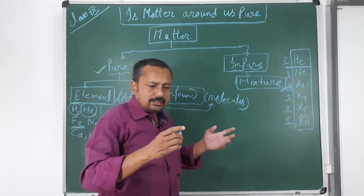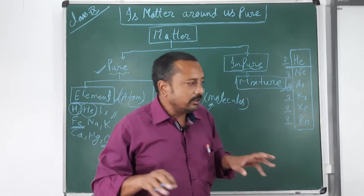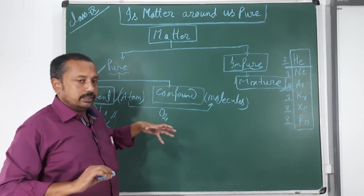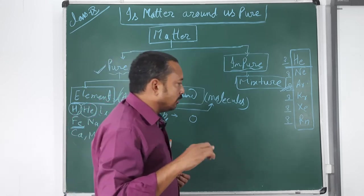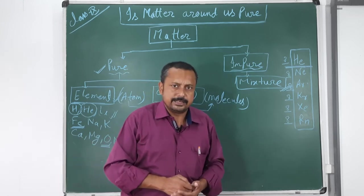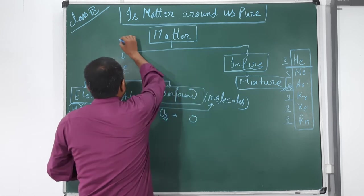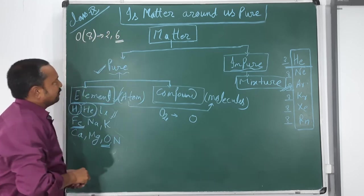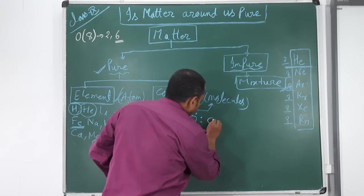The definition of a compound: compounds are pure substances formed by mixing two or more atoms in a fixed ratio by mass, either by gain and loss of electrons or by sharing of electrons. The force of attraction between two atoms within a molecule is known as chemical bonding. For example, oxygen element O is found in atomic form, but in our atmosphere, oxygen exists as O2, because O2 is a stable unit.